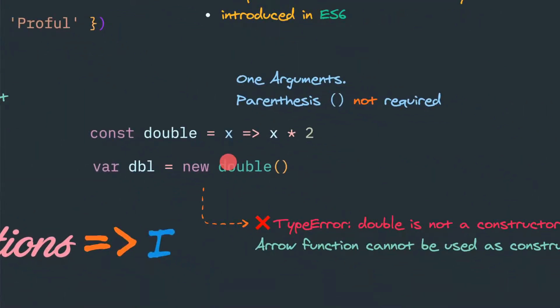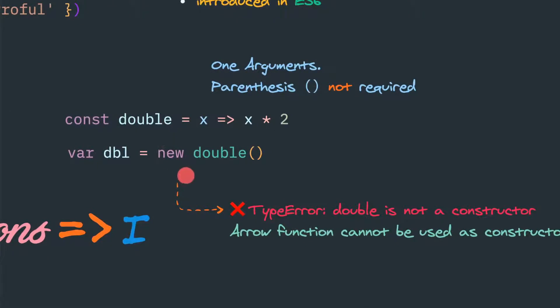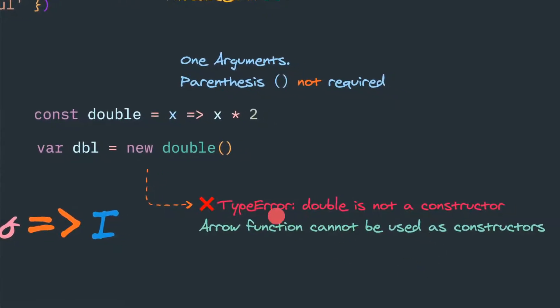One more important thing to know. In traditional functions, we can use the new keyword in conjunction with the legacy function, which will call the constructor. But an arrow function cannot be used as a constructor. So you cannot use the new keyword.